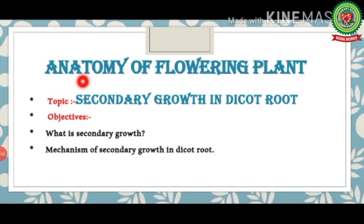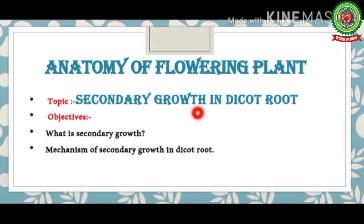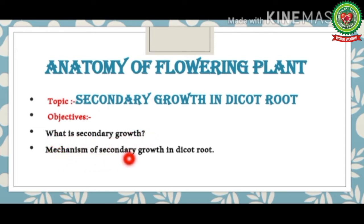Good morning students. Today we are going to start another topic of the chapter 'Anatomy of Flowering Plant'. The name of the topic is secondary growth in dicot root. The main objectives of this topic will be to know what is secondary growth and the mechanism of secondary growth in dicot root.